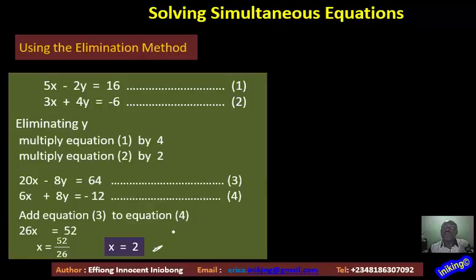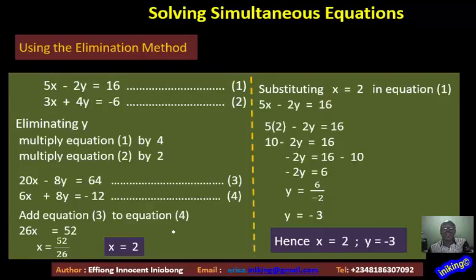Now we know the value of X. What about Y? Well, go back to equation 1 or equation 2. Substitute the value of X into any one of the equations, and then you'll be able to get the value for Y. So we have here, substituting X, which is 2, in equation 1. And this is our equation 1, 5X minus 2Y equals to 16.